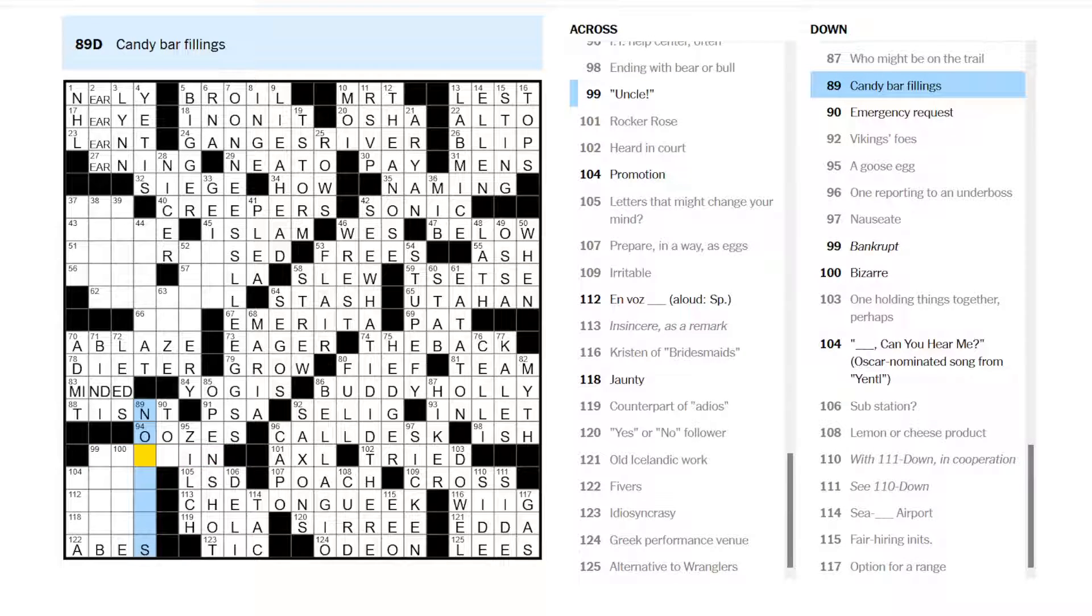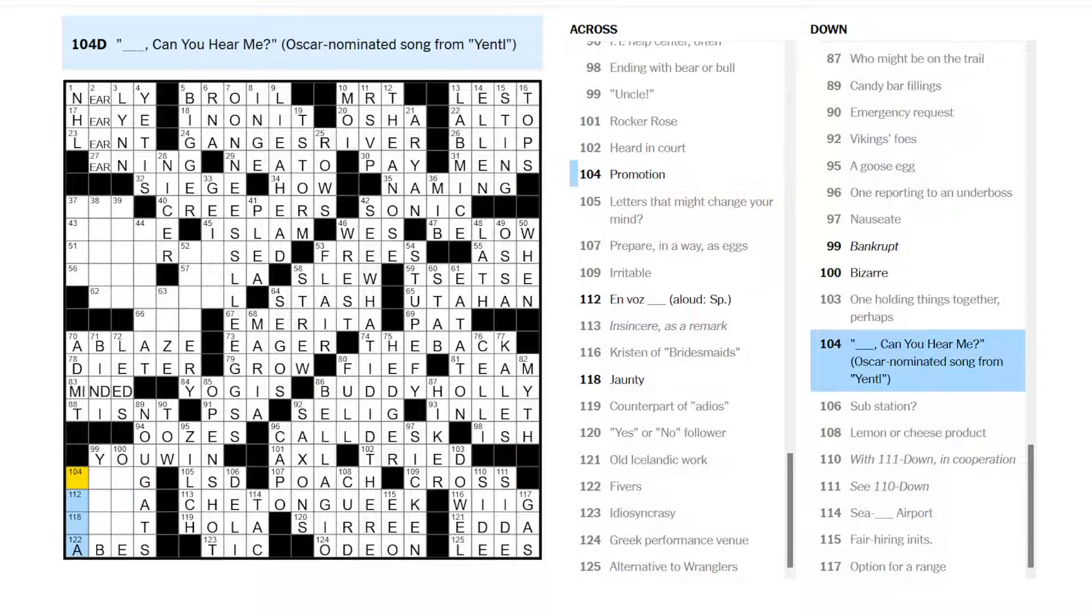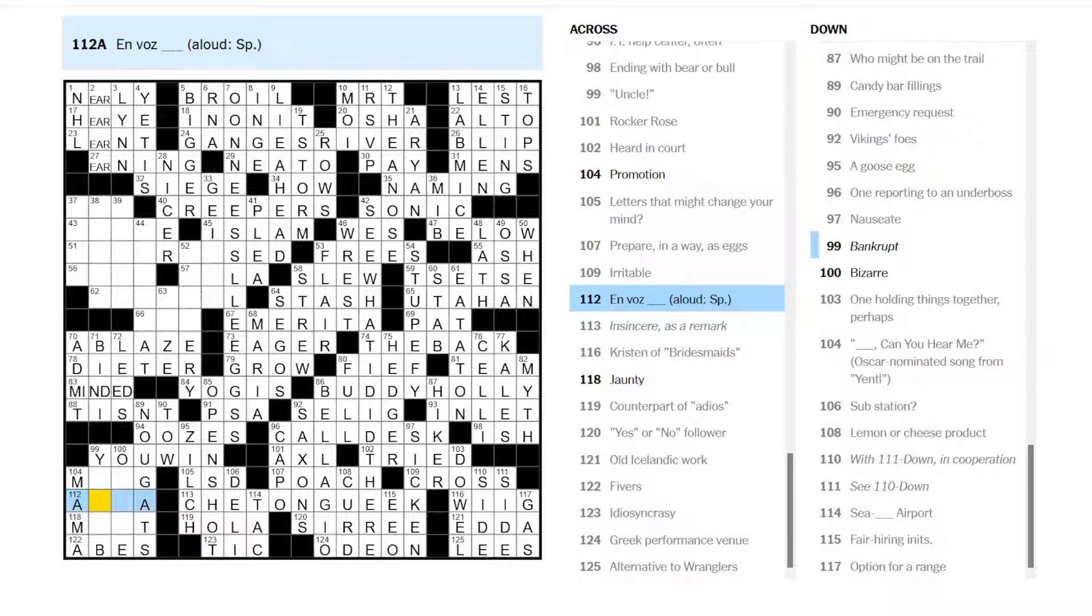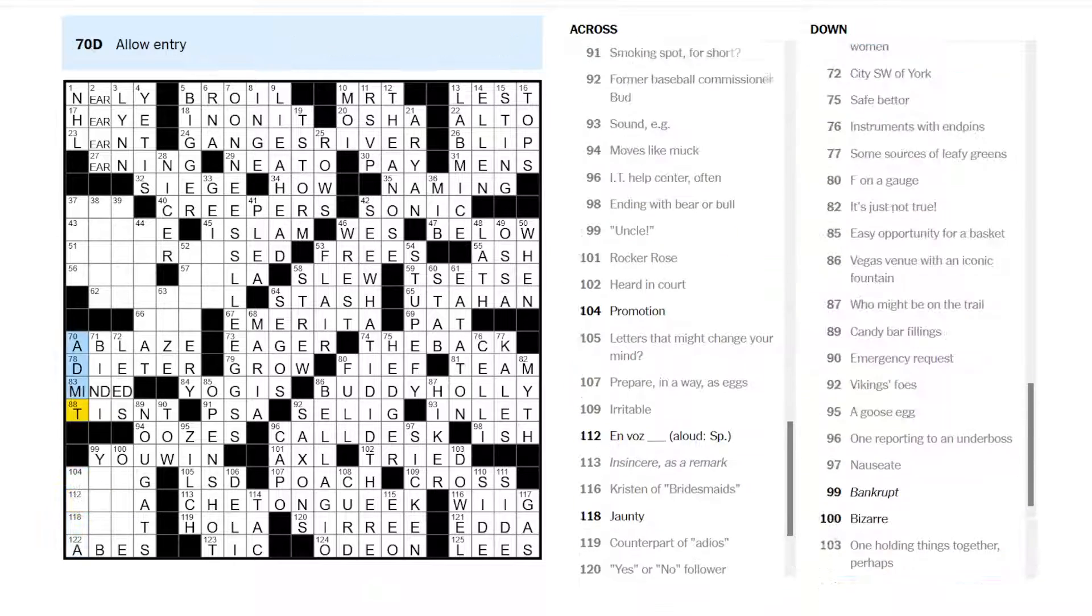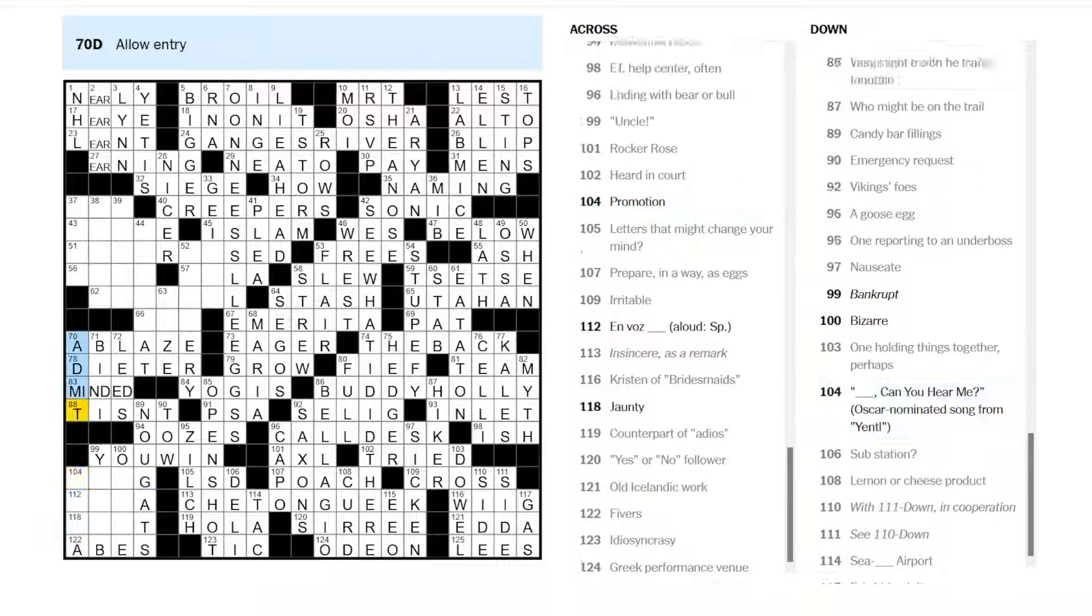Candy bar fillings. That still looks like maybe nougat. Uncle, you might say, if I give in, I give up. Mercy. Emergency request. A toe, maybe. You win. Okay. Bankrupt. I still don't know about this one. Bankrupt. Bizarre. Promotion. Something, can you hear me? Mama, can you hear me, maybe? Promotion. Jaunty. Let's come back to that one.